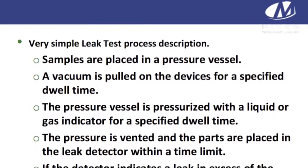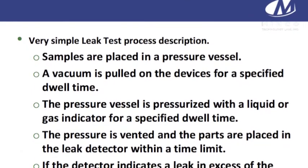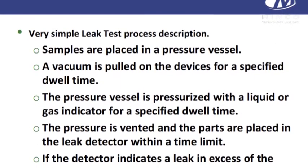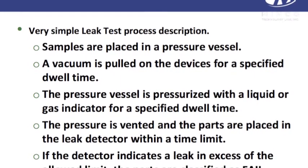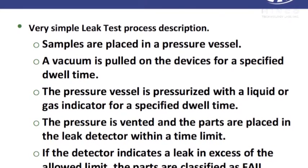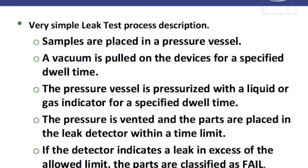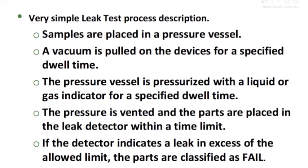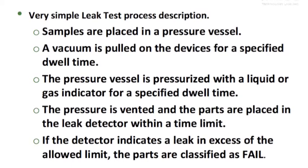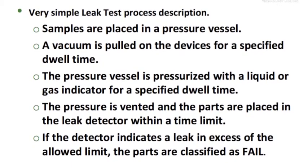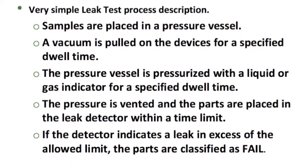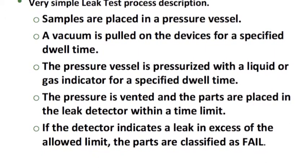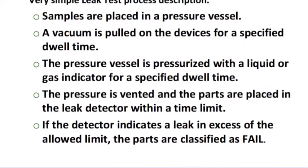A simple description of leak testing: parts that need to be tested are placed in a pressure vessel. A vacuum is pulled on the parts for a specified time. The pressure vessel is then filled with a liquid or gas used to try to penetrate the part if it has a leak, under pressure. The pressure is vented off, and the parts are placed in a detector within a specified time limit. The detector tells you if gas is escaping or a leak is taking place.